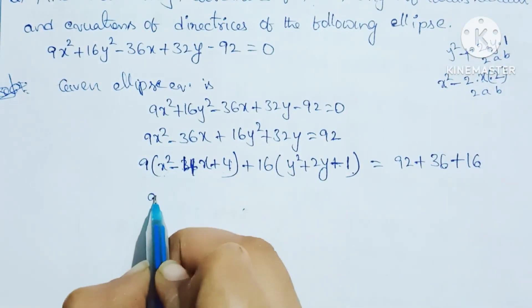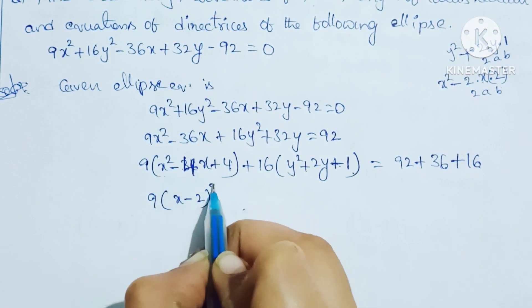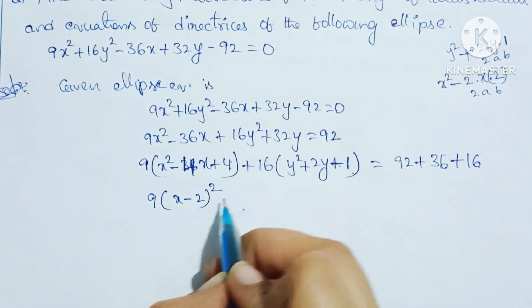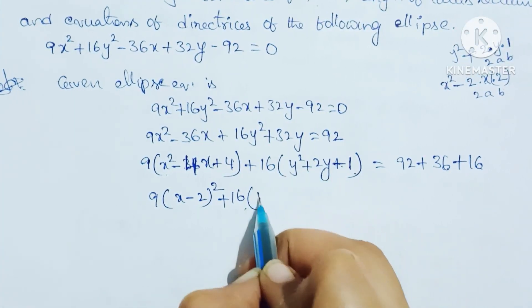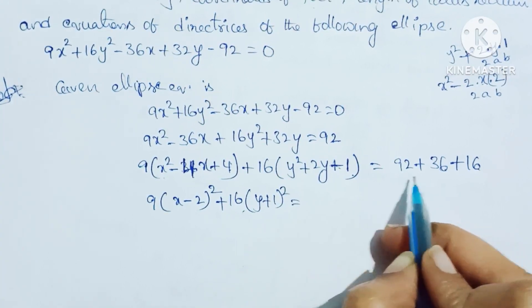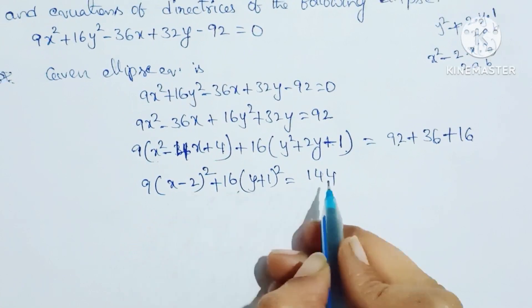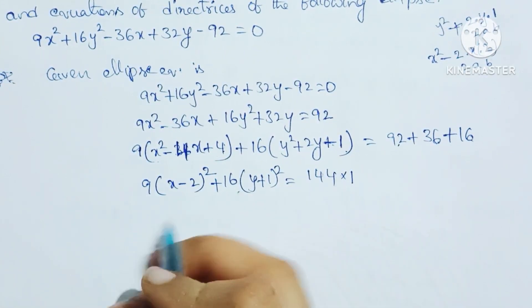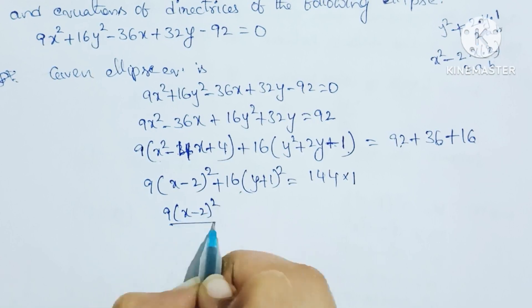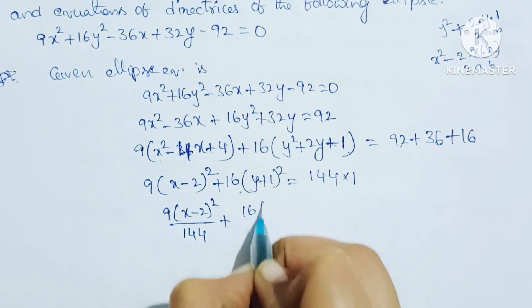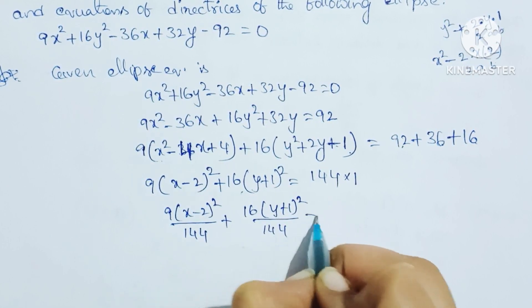So we get 9(x - 2)² + 16(y + 1)² = 144. Dividing through by 144: 9(x - 2)²/144 + 16(y + 1)²/144 = 1.